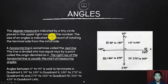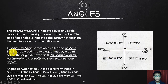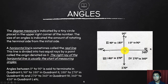The degree measure is indicated by a tiny circle placed on the upper right corner of the number. The size of an angle indicates the amount of rotating the terminal side from the initial side. A horizontal line is divided into two equal rays by a point called the origin. The right ray of the horizontal line is usually the start of measuring angles — from the horizontal positive x-axis.